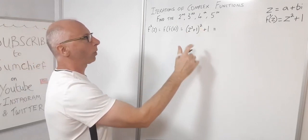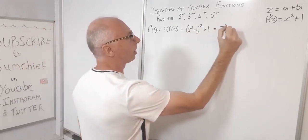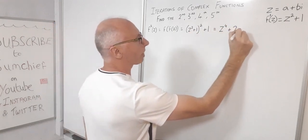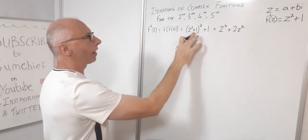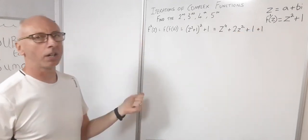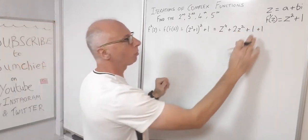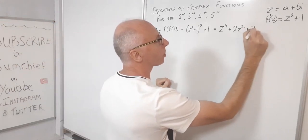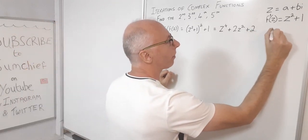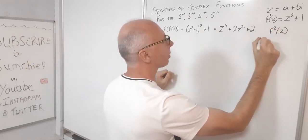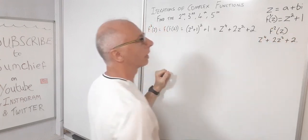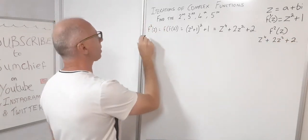So (z² + 1)² gives us z⁴ + 2z² + 1, and then adding the constant +1 gives +1 again. The two constants combine to give +2. So our second iteration is: f₂(z) = z⁴ + 2z² + 2.